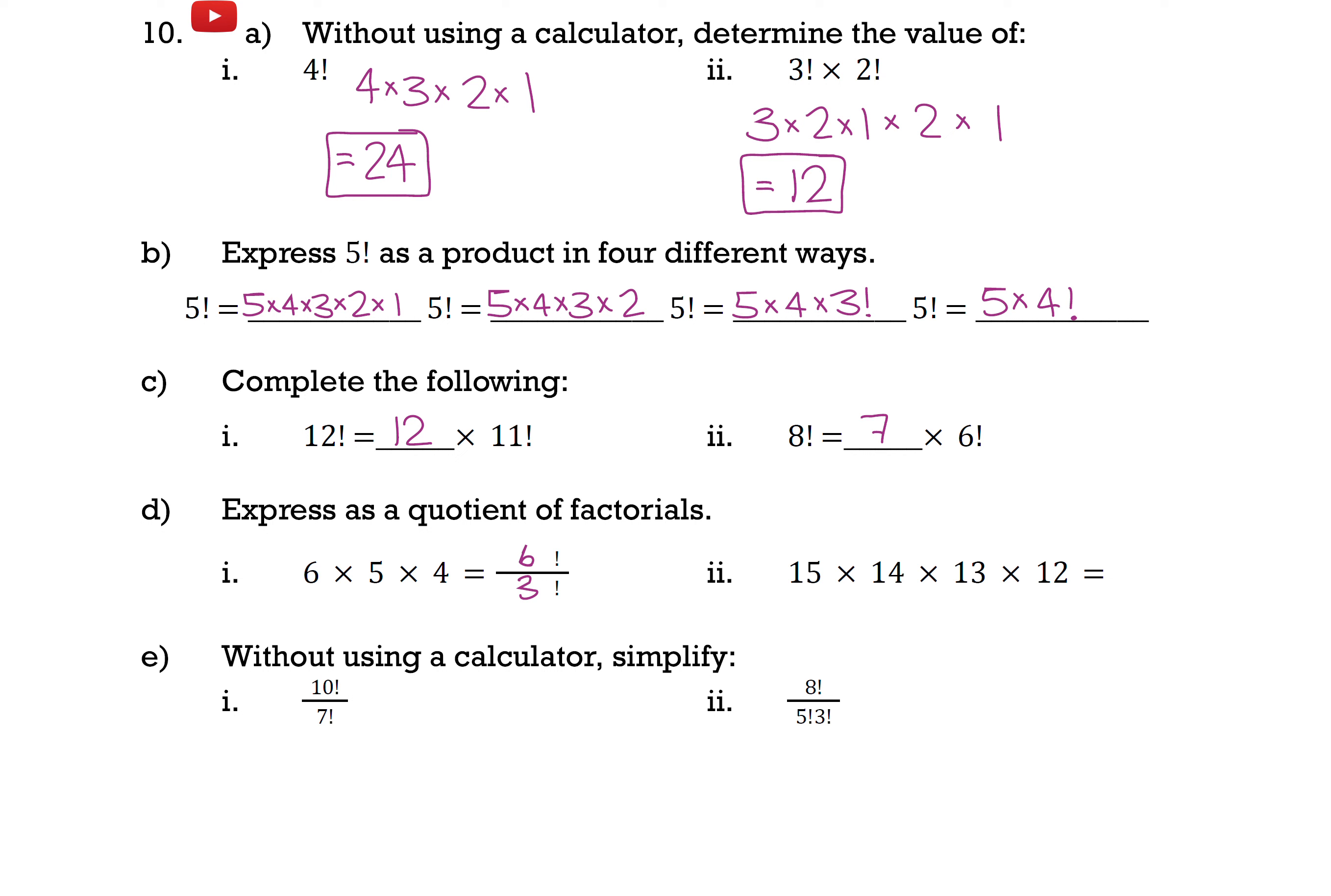And same idea here for part 2. So 15 times 14 times 13 times 12. Multiplying by 11 or less is not there. So I know I'm dividing by 11 factorial. And dividing by what? Well, we started at 15. So we have 15 factorial up top. So 15 factorial divided by 11 factorial.